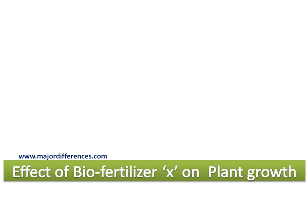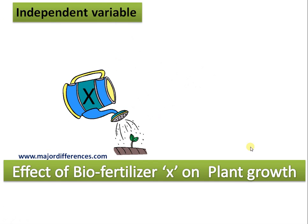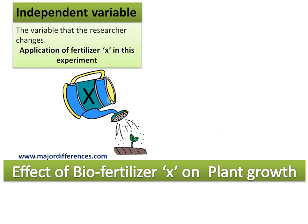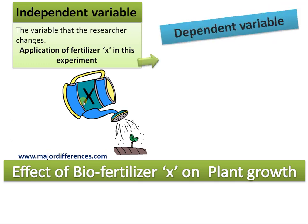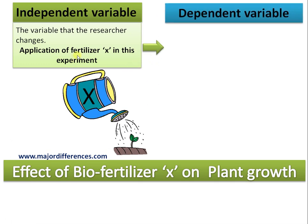The example is: effect of biofertilizer X on plant growth. Suppose a researcher has developed a biofertilizer and is testing its effect on plant growth. The independent variable is a variable that the researcher changes — here it is the application of fertilizer X, the variable that the researcher manipulates.